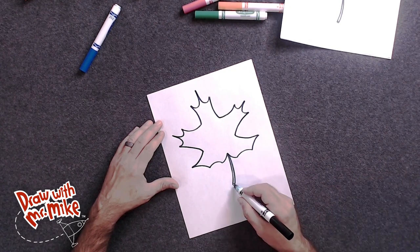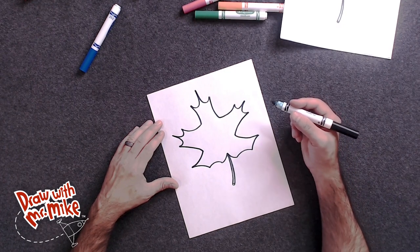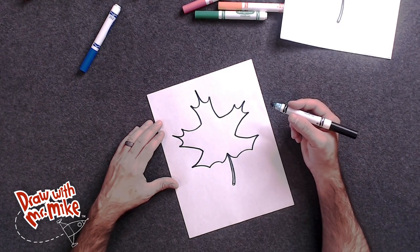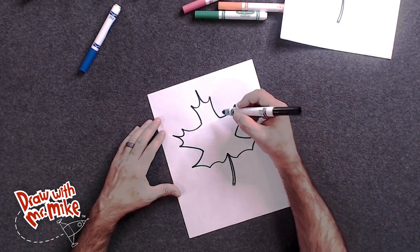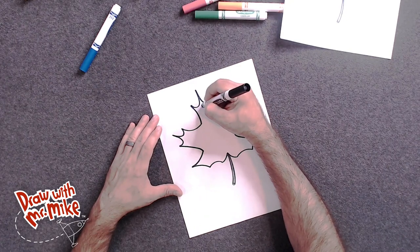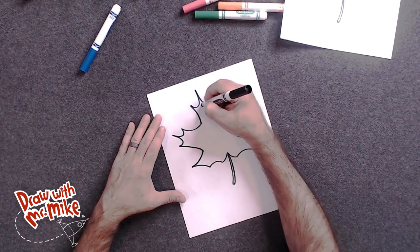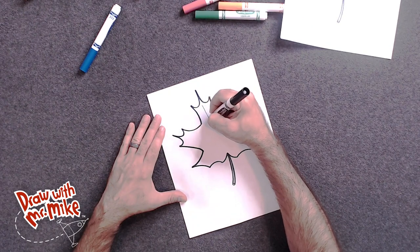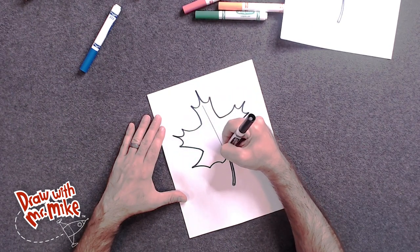For the bottom of the stem. That's where it came from the tree. From the branch. Next we're going to add lines. So we'll start at the top here. And we're going to go straight down to that stem. So let's just do a very light line. Straight down to the stem.